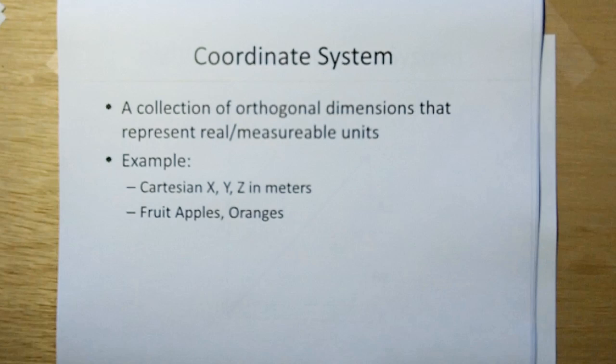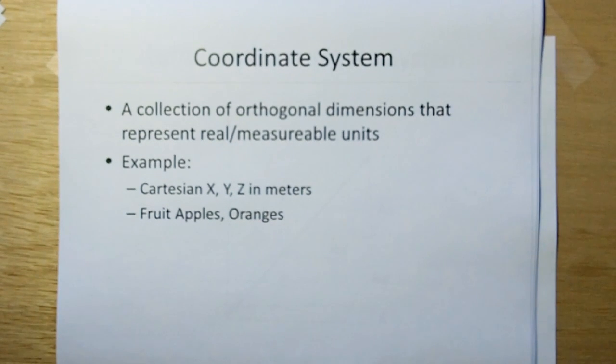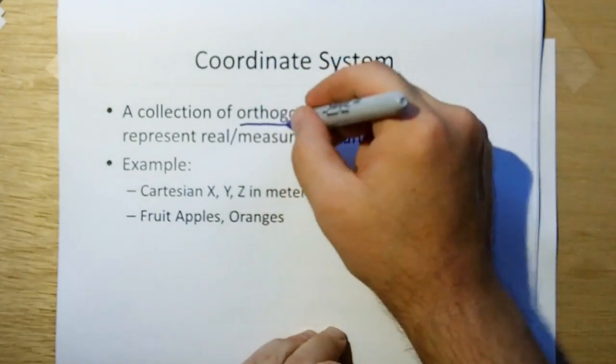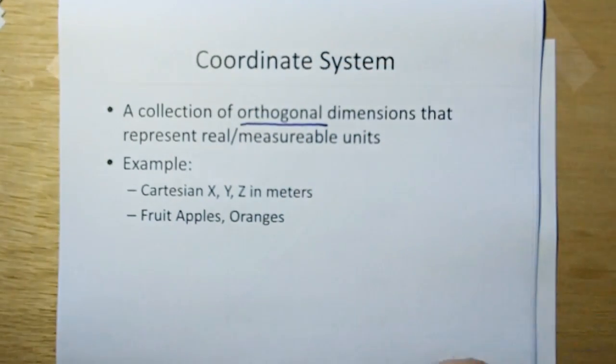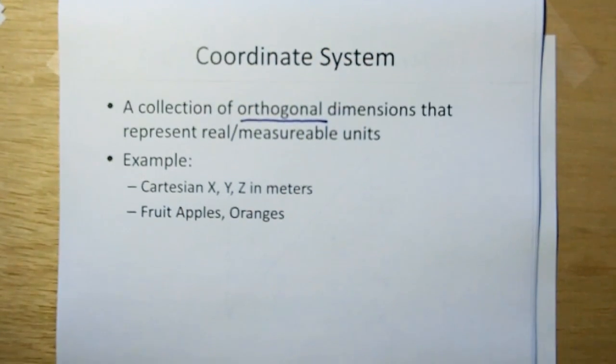We discussed in the last video what a coordinate system is. A coordinate system is a collection of orthogonal, and we're going to define this word, so don't worry if this word looks scary to you, dimensions that represent real measurable units.